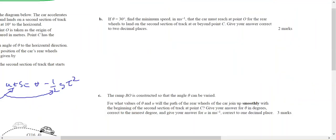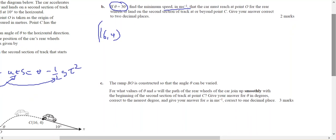Okay, if I'm told that the angle is 30 degrees, find the minimum speed that must reach 0.0. Okay, so it's got to go through the point 16.4 for the back to land there.